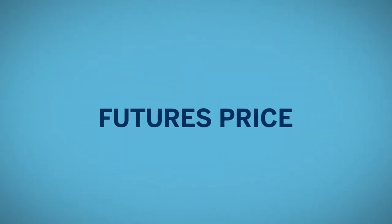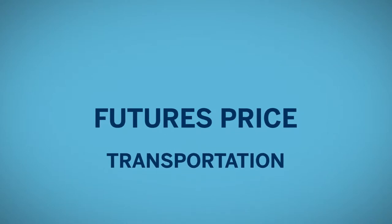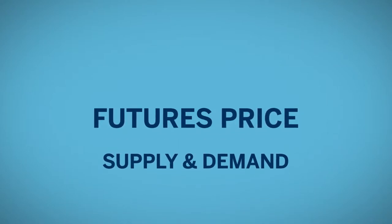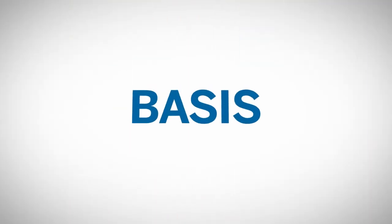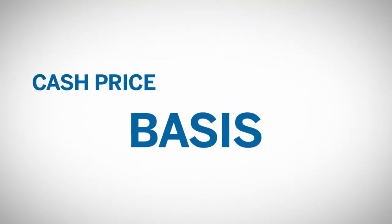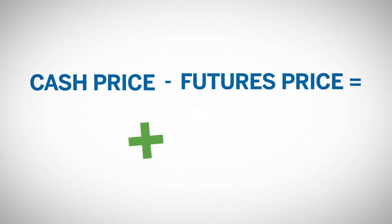This is because in local markets, the futures price for livestock is going to be adjusted for such variables as quality, location, and transportation, as well as supply and demand factors impacting that particular area. The price difference is known as the basis, which is calculated as the cash price minus the futures price.